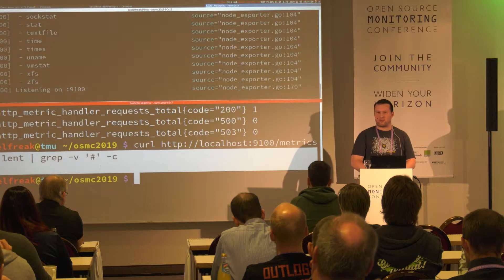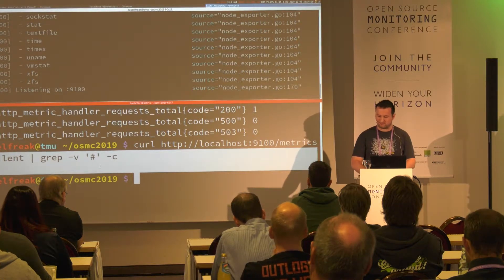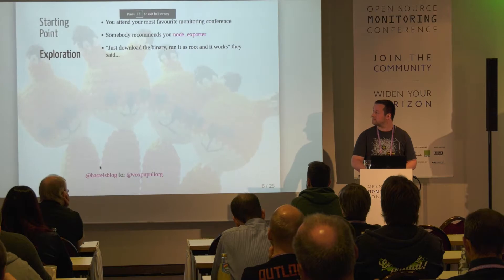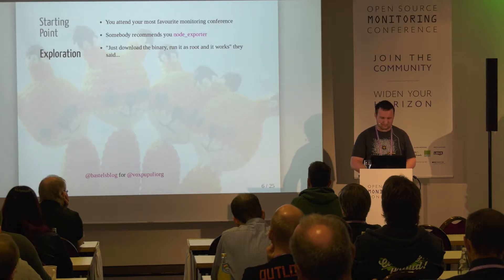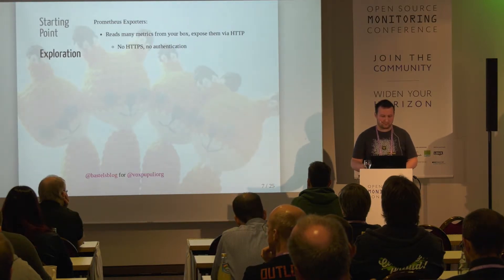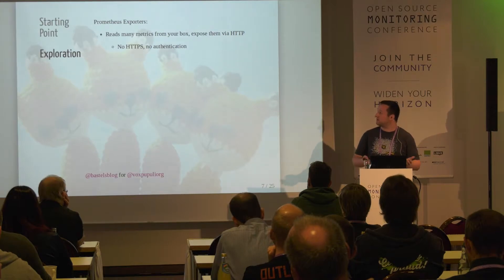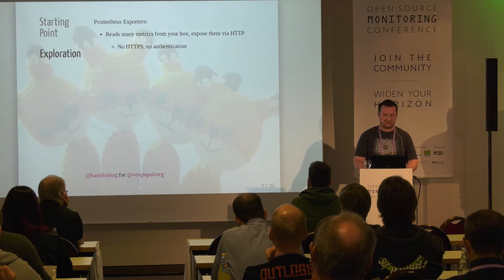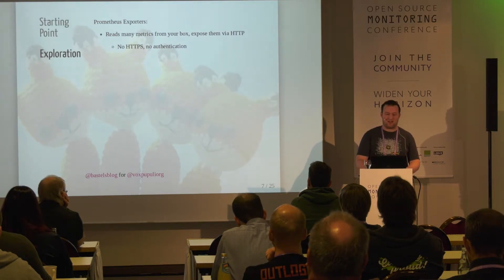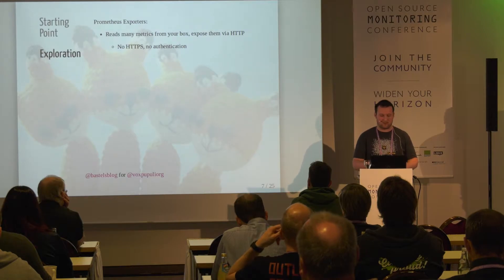If you take a deeper look at the metrics, you notice that maybe 90% are not relevant for your infrastructure at all, but it's always good to have them. The node exporter works pretty simply: it reads a bunch of values and exposes them locally via an HTTP interface that you can pull. It doesn't provide any authentication or encryption like HTTPS. That's bad if you like security, but it also makes the daemon smaller with less attack surface, so there are always trade-offs.